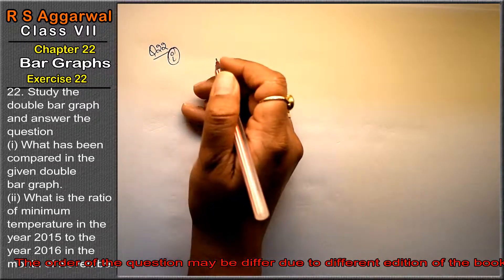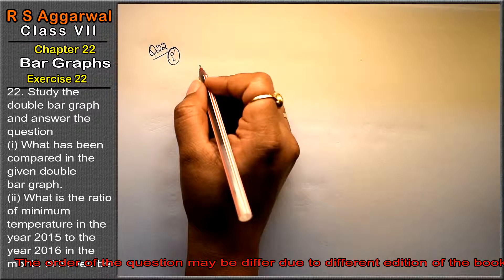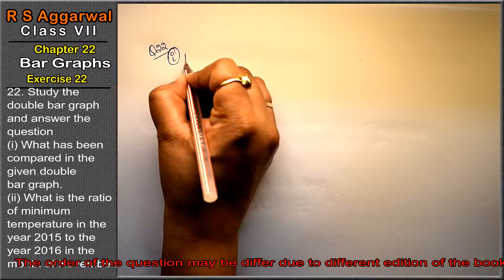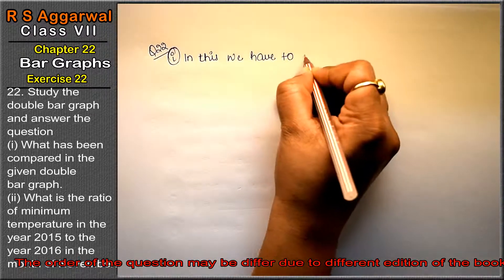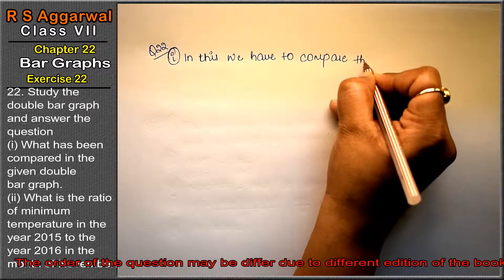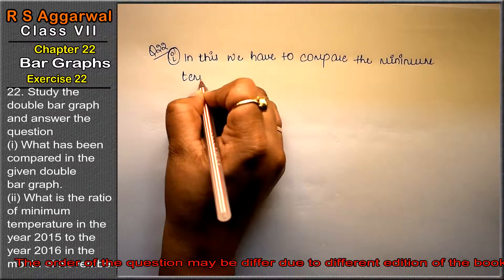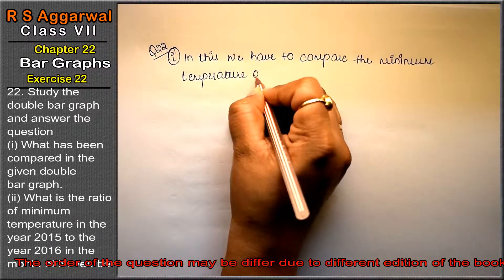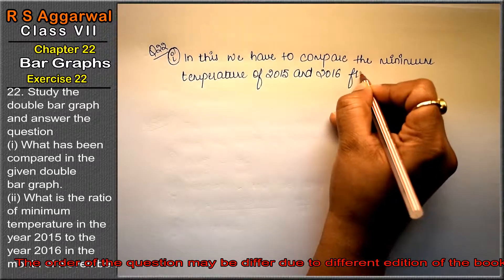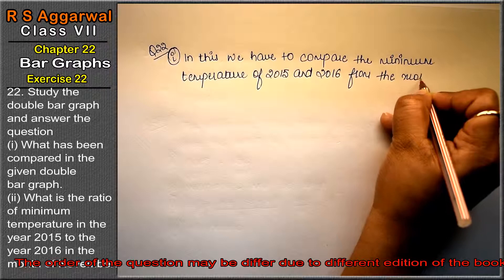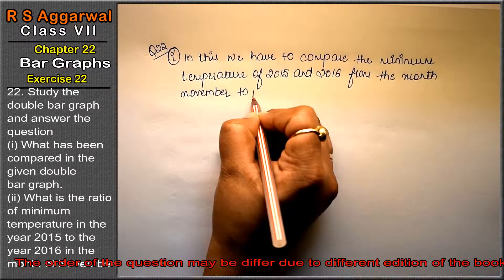Let's do the first part. First part is: what has been compared in the given double bar graph? We have to write what is being compared in this double bar graph. In this, we have to compare the minimum temperature of 2015 and 2016 from the month of November to February.